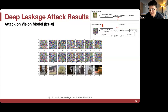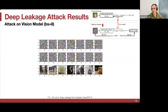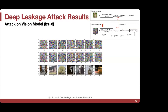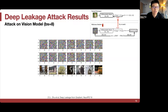Audience question: How is the dummy input generated at the first step? It's initialized at random — pretty straightforward. We didn't consider other more complicated initialization methods based on data distributions, since we have no prior. The assumption is we know nothing about the input, so it's just randomly initialized.